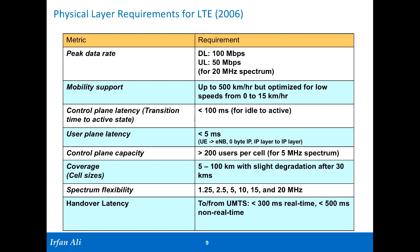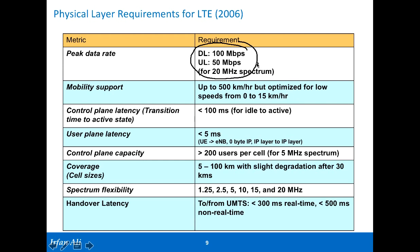Let's look at the technical details — what the main requirements for LTE were. When LTE was being specified, the main idea was to get speeds much higher: downlink up to 100 megabits per second, uplink 50 megabits per second. Downlink is always more important. The bandwidth target was 20 megahertz. Another requirement was the idle-to-active transition — that's when your phone is idle, you pick it up and want to go to YouTube; that time should be less than 100 milliseconds.